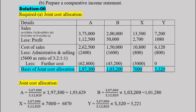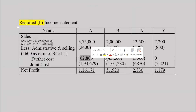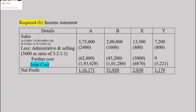This is the market value video for the cost allocation. For the further cost and joint cost, we finalize the income statement figures, ensuring the joint cost is correctly apportioned and the further processing costs are properly assigned to each product.